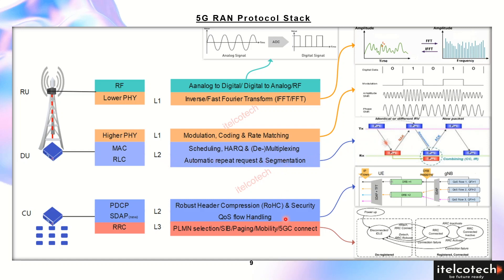In the central unit, a new protocol called SDAP — Service Data Adaptation Protocol — is incorporated, which is used for QoS flow handling. In 5G we have end-to-end QoS enabled, with different QFIs, which we'll discuss in subsequent slides. Any communication with the core network is handled by the RRC, which is embedded in the central unit in the case of 5G. These are broadly the use cases of these different protocols.